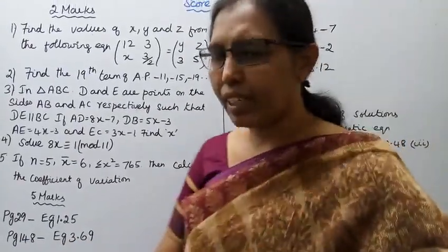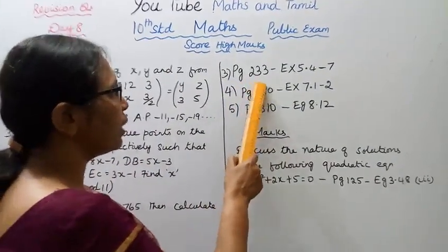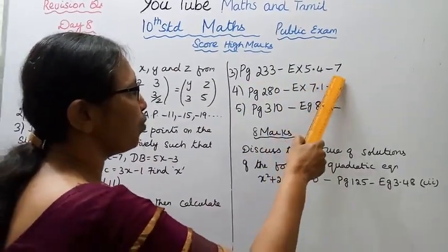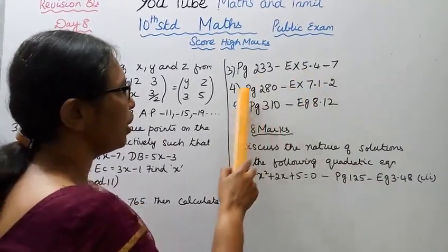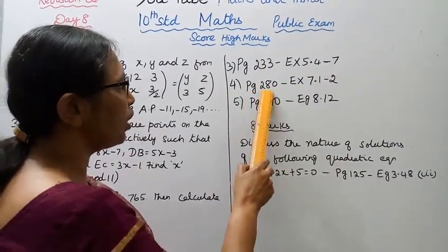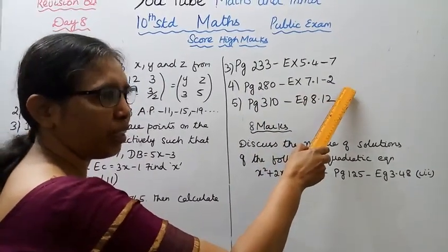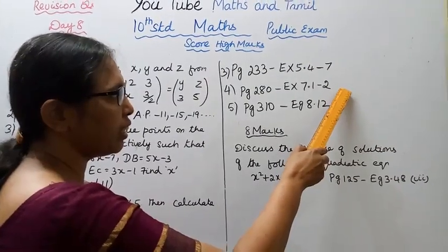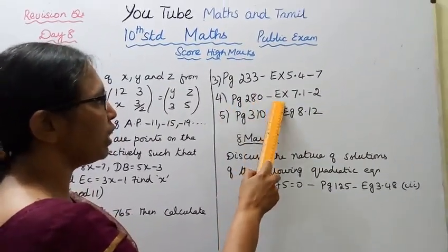Fourth, Page 280, Exercise 7.1, second problem, important CSA/TSA of a cylinder related problem. Fifth, Page 310, Example 8.12.